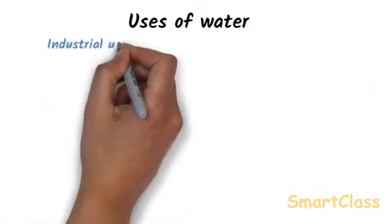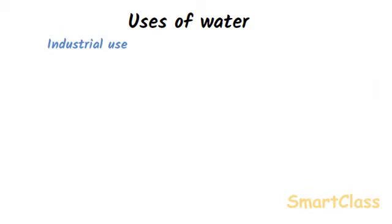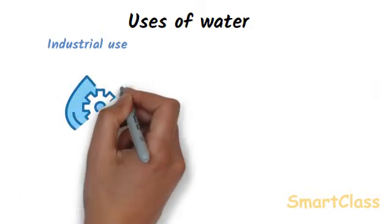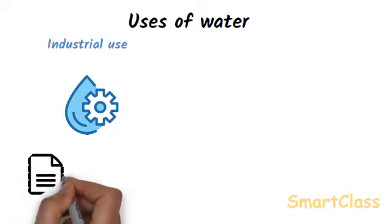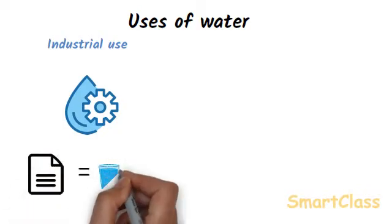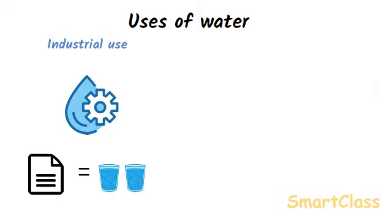Industrial use of water: The making of paper, cloths, medicines, chemicals, bakery products and many other things in industries require a lot of water. Example, making of one page of a regular textbook consumes about 2 glasses of water in the paper mill.